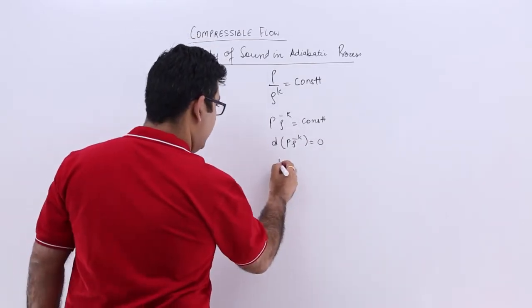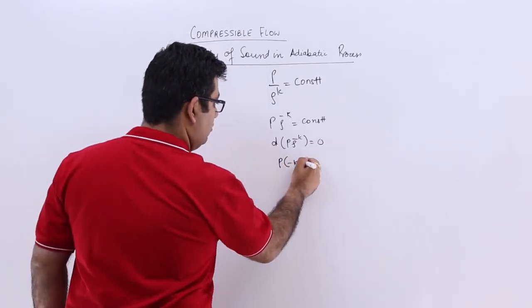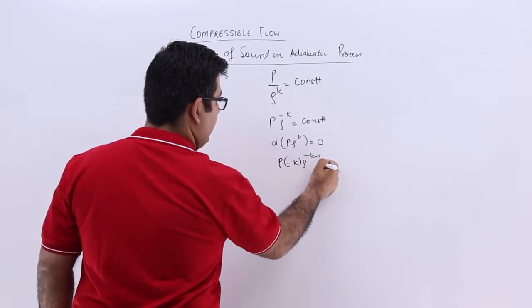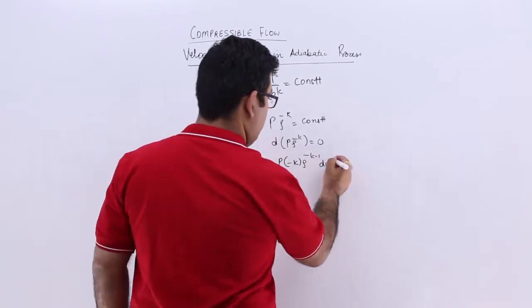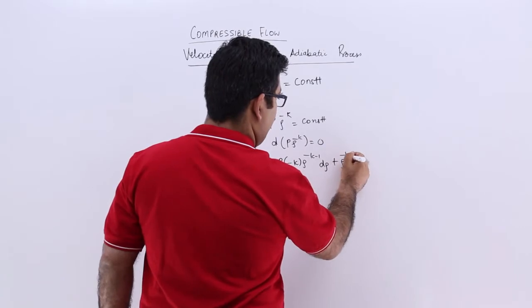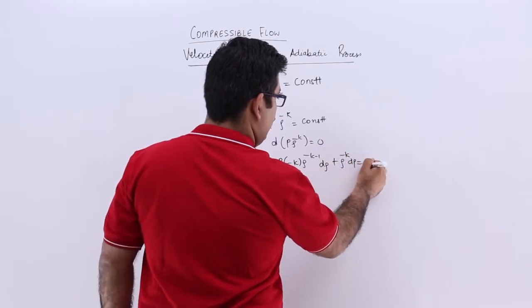And it will be p times minus k times rho to the power minus k minus 1 d rho plus rho to the power minus k dp equals 0.